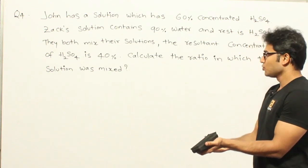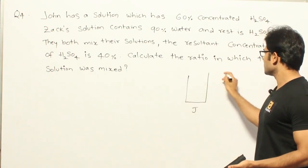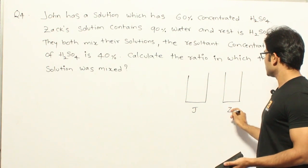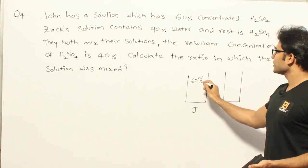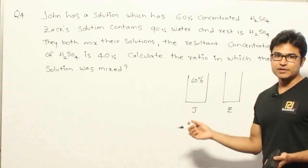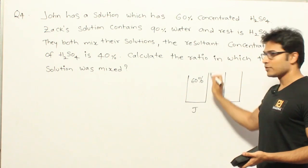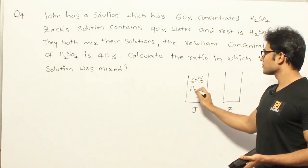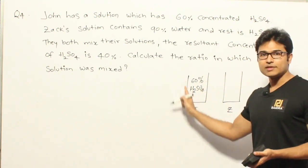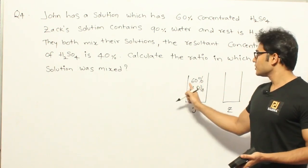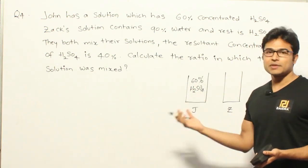There are two solutions — one belongs to John and the other belongs to Jack. In John's solution, it contains 60% concentrated H2SO4. Whenever you talk about these liquids, concentration means out of the total liquid, 60% is H2SO4. So if you assume the total liquid is 100 liters, 60 liters will be H2SO4 and the remaining will be some other liquid.